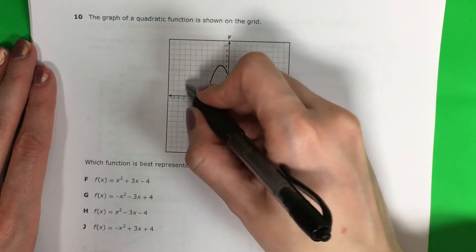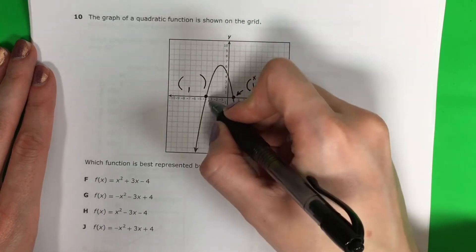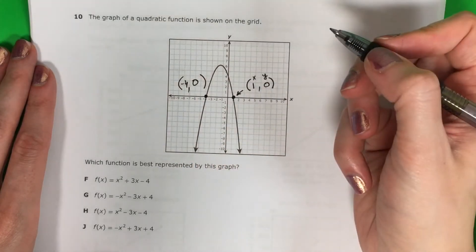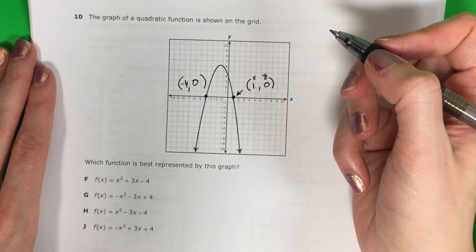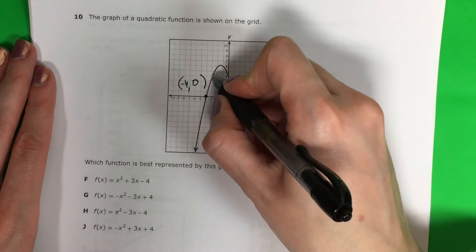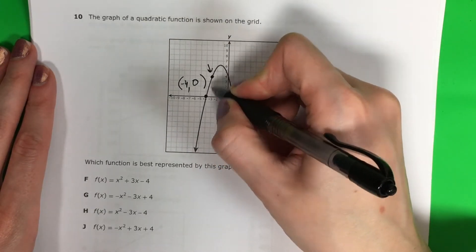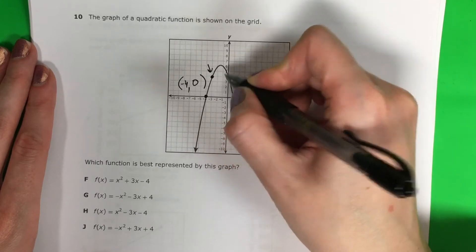And I'm going to go ahead and do this x-intercept, it looks like it's negative 4 comma 0. And another good point would be this one right here. It's touching in a corner, in una esquina. That's going to be negative 3, 4.